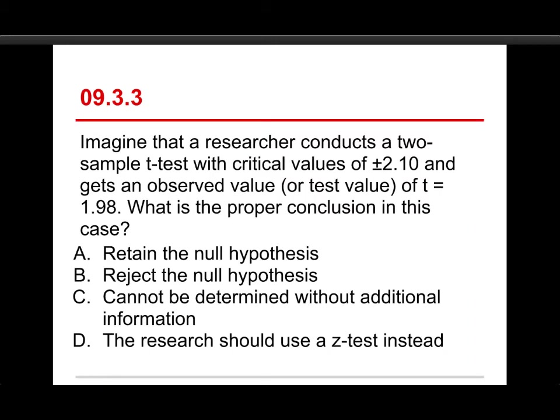Number three. Imagine that a researcher conducts a two-sample t-test with critical values of plus and minus 2.10, and gets an observed or test value of t equals 1.98. What is the proper conclusion in this case? The choices are retain the null hypothesis, reject the null hypothesis, it can't be determined without additional information, or the researcher should use a z-test instead.